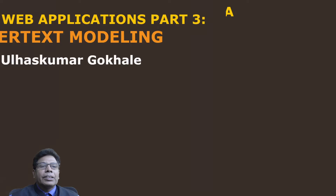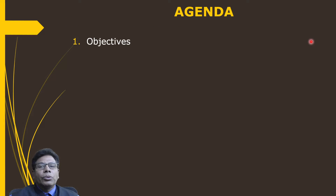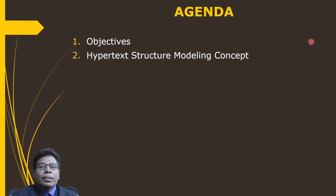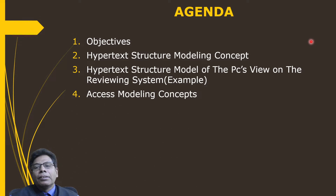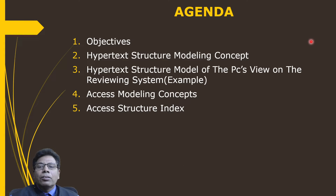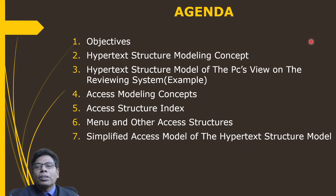Let us start with the agenda. First we will study the objectives. Then we'll discuss the hypertext structure modeling concept. Then we'll take an example of reviewing systems for studying the hypertext structure model of the program chair. Then we'll discuss the access modeling concept, the access structure index, the menu and other access structures, the simplified access model, and lastly the relation to the content modeling.